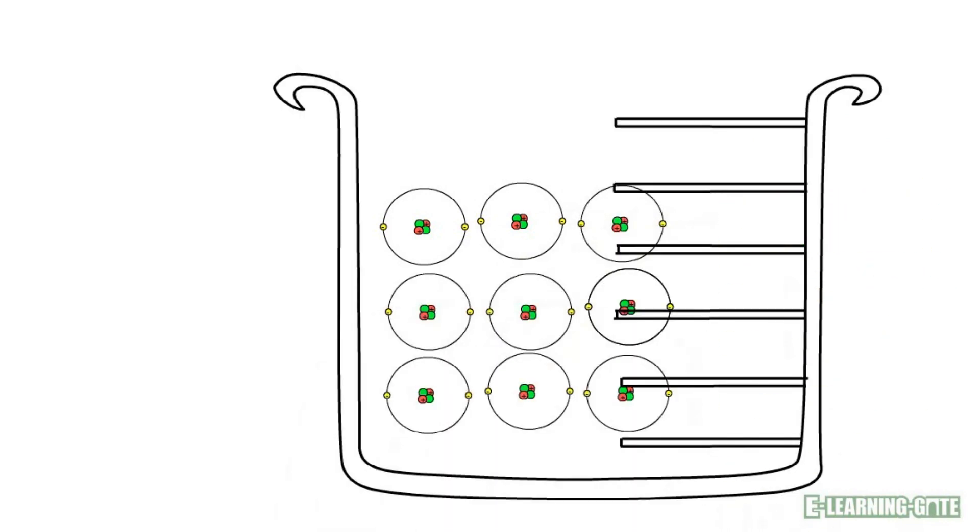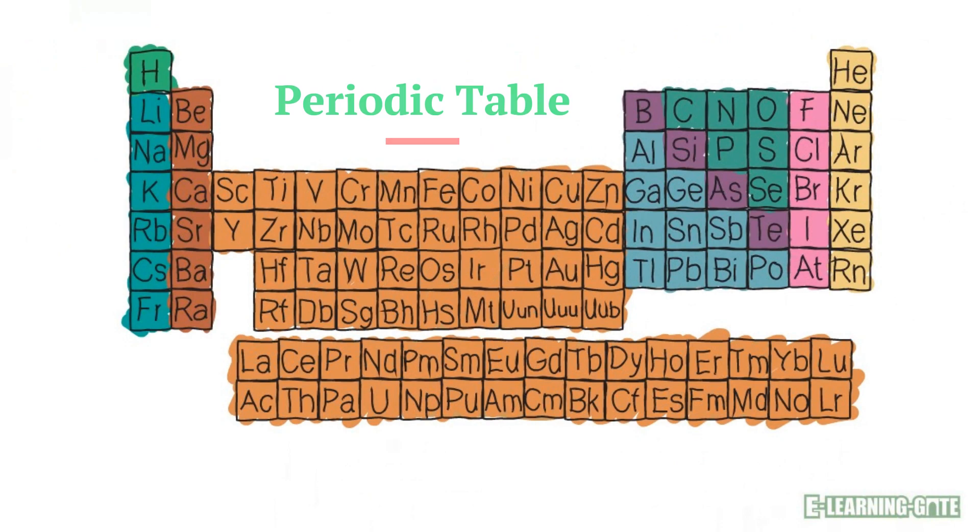The periodic table is a table of elements. A small piece of iron has, for example, millions of atoms. All these atoms have the same atomic number because iron is an element. Here is an element.